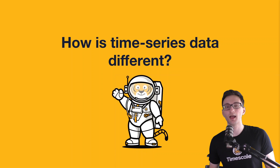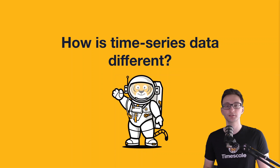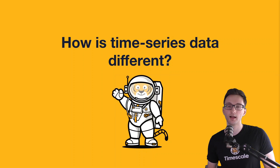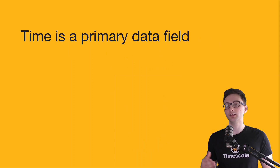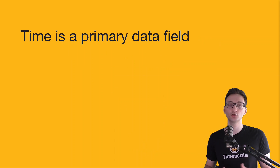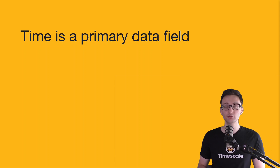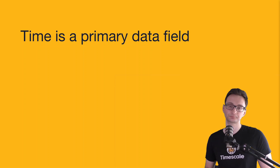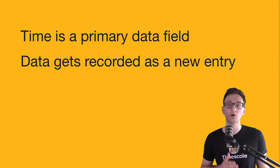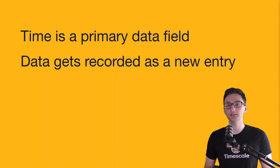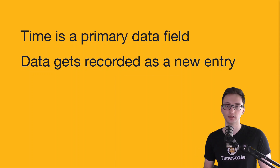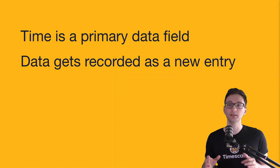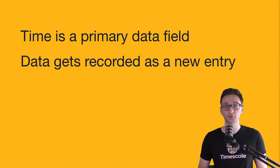Now let's answer the question: how is time series data different, especially how is it different from regular or general data? I highlight four main characteristics of time series data. First of all, time is a primary data field. Time plays a huge role when analyzing time series data, and so each record needs to be connected to a time field. Next, the data that arrives is almost always recorded as a new entry. This means that whenever something changes, you don't update the previous entry like you would normally do. Instead, you just insert a new entry into the database, and this allows you to keep historical data, which is a key component of time series data sets.